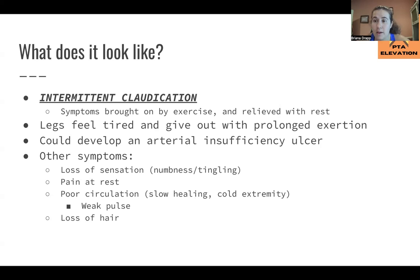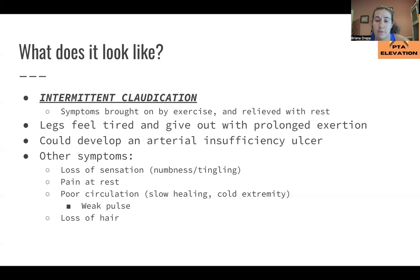Intermittent claudication causes pain. Similar to arterial ulcers where elevation causes pain because blood can't get across the occluded area. It's brought on by exercise — a patient could be walking for five minutes and then feel pain and cramping in their calves. When they sit down, it goes away. Symptoms are brought on by exercise or activity and relieved with rest. They feel pain — not just weakness — and will feel tired with prolonged exertion. This can also cause a patient to develop an arterial insufficiency ulcer, as lack of blood flow causes the skin to ulcer.